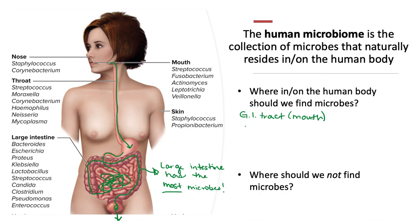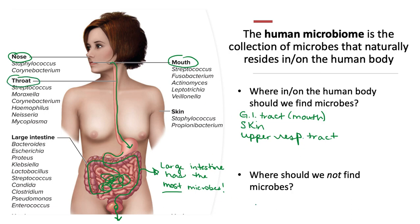Second to the GI tract, we have our skin, which houses a lot of microbes. In addition to our skin, we have our upper respiratory tract, which includes the mouth, the nose, and the throat. The lower respiratory tract — which includes our lungs and our trachea — should be sterile.